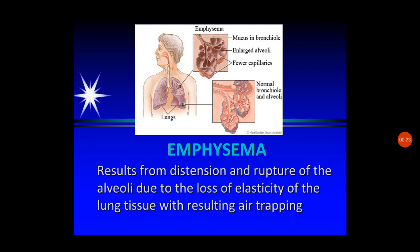As we discussed about bronchiolitis, air trapping occurs especially during expiration because of the narrowing of the airway and normal narrowing during expiration. Over time, elasticity is lost and this leads to rupture. That is the basis of emphysema.